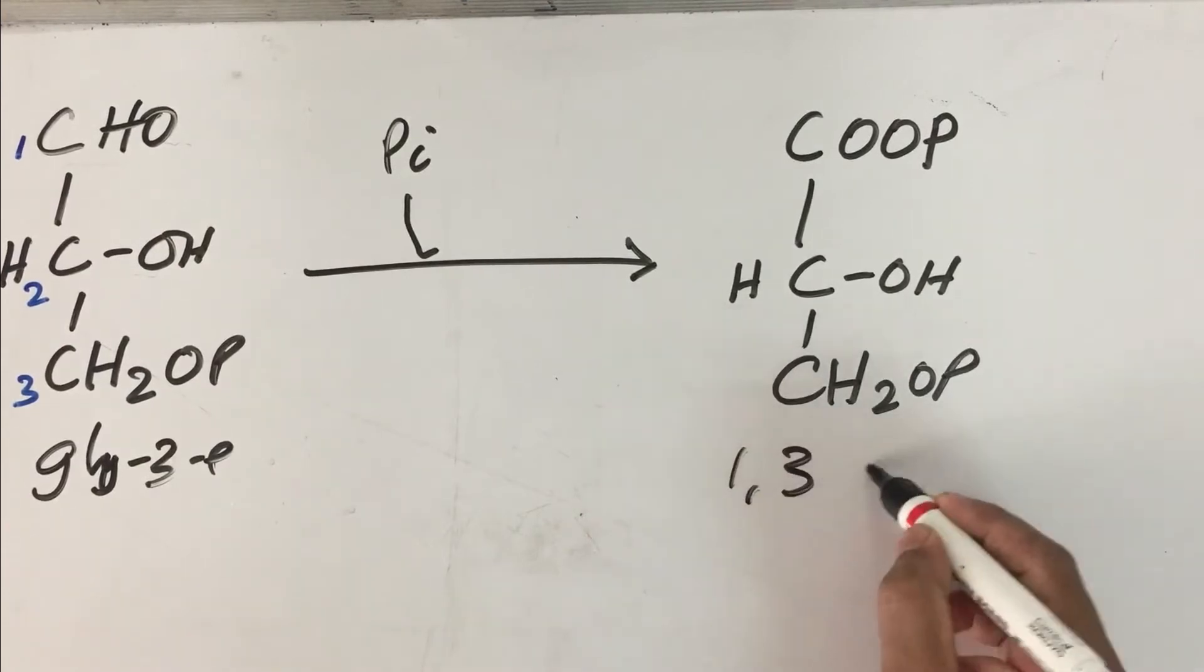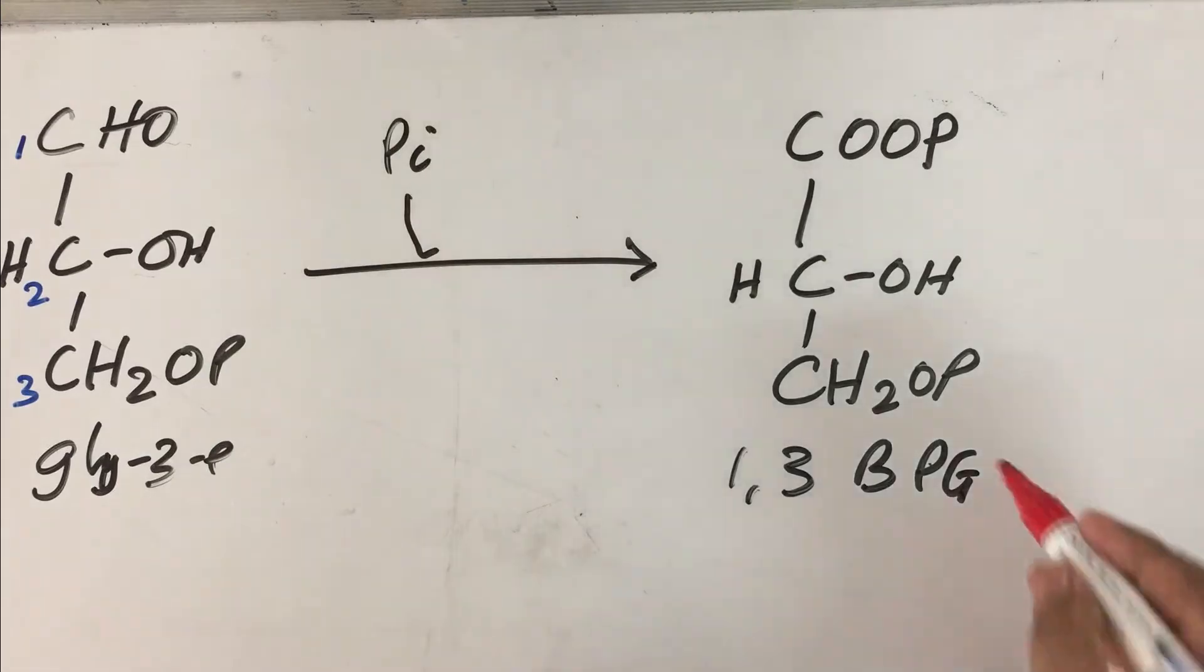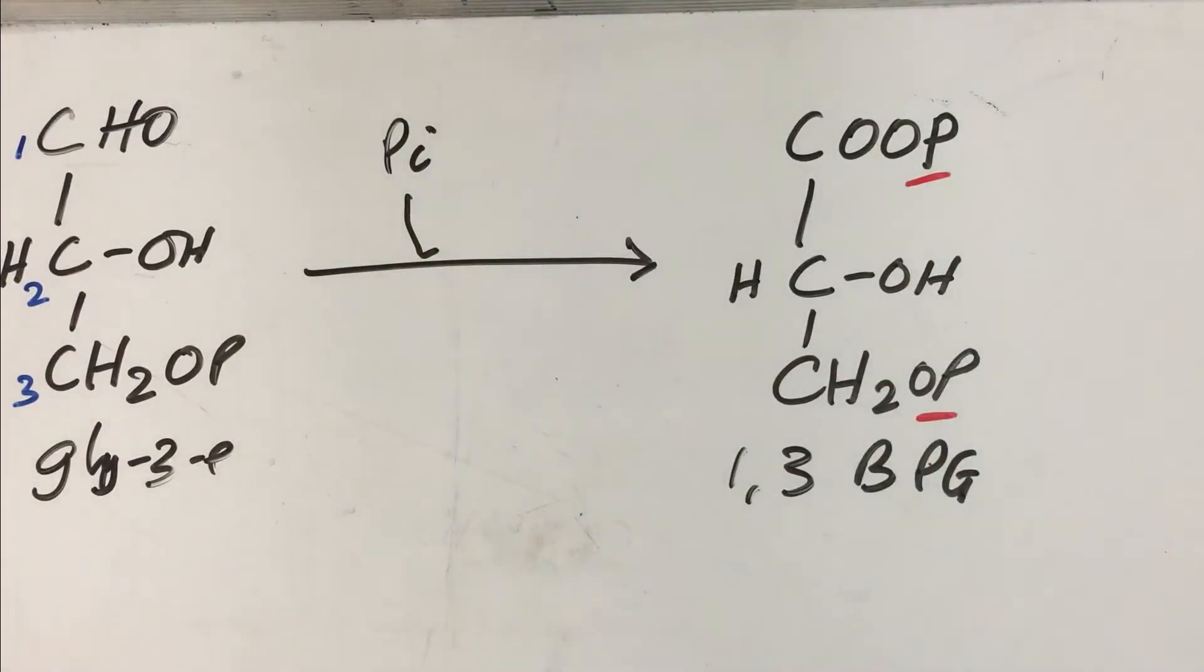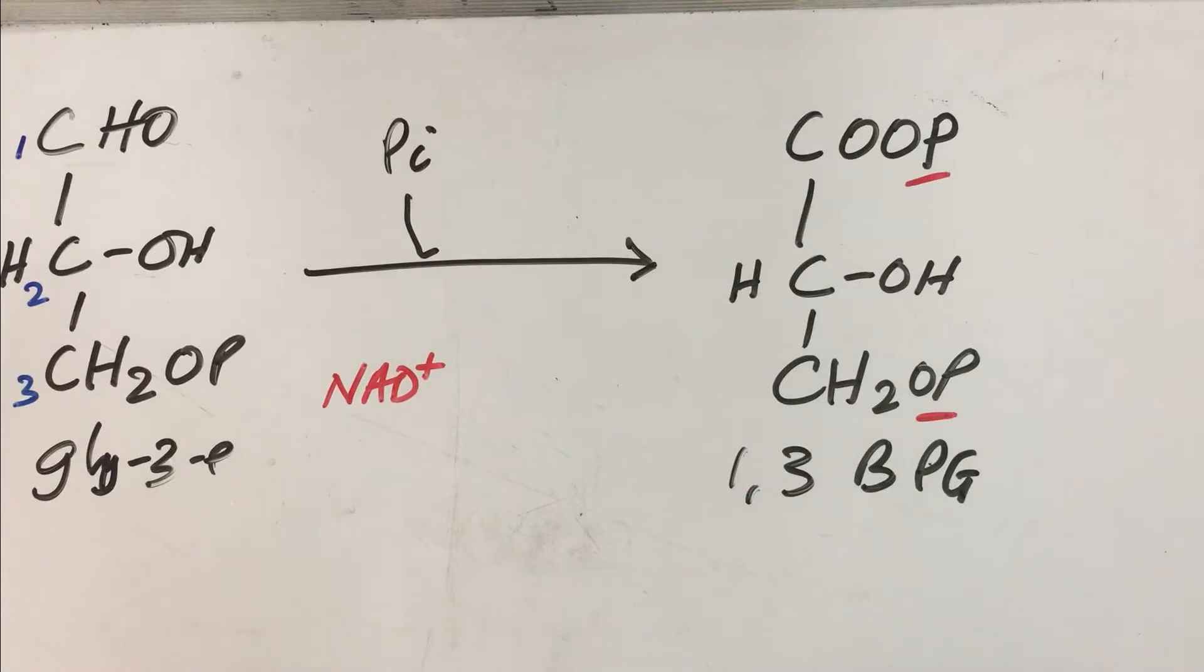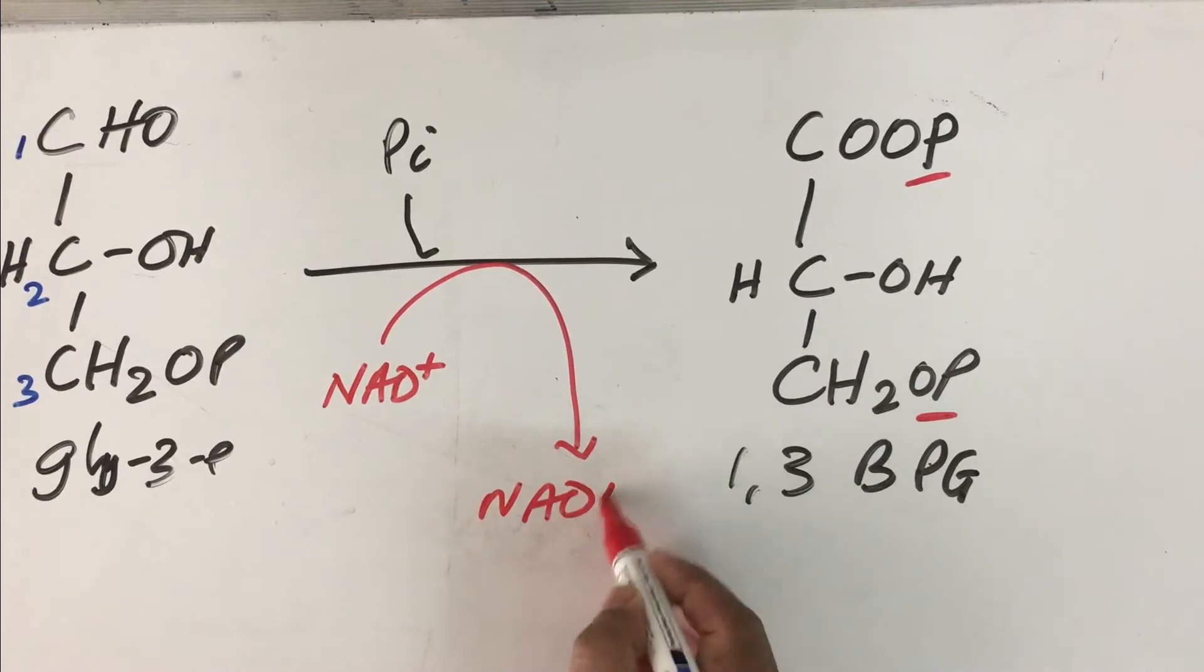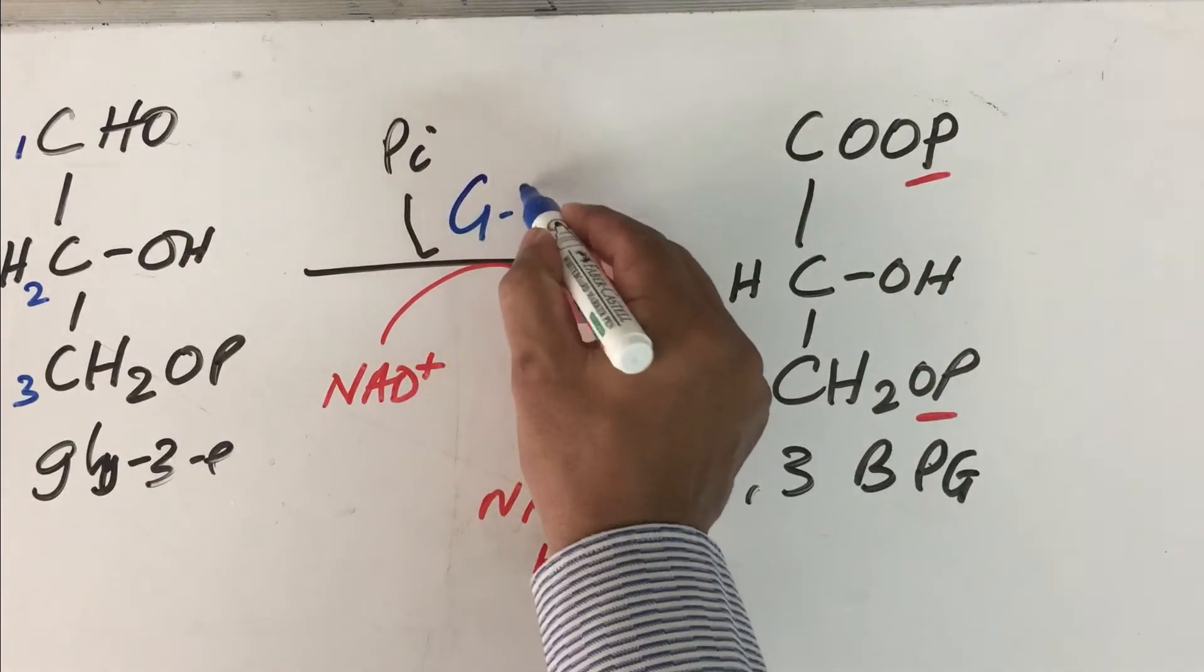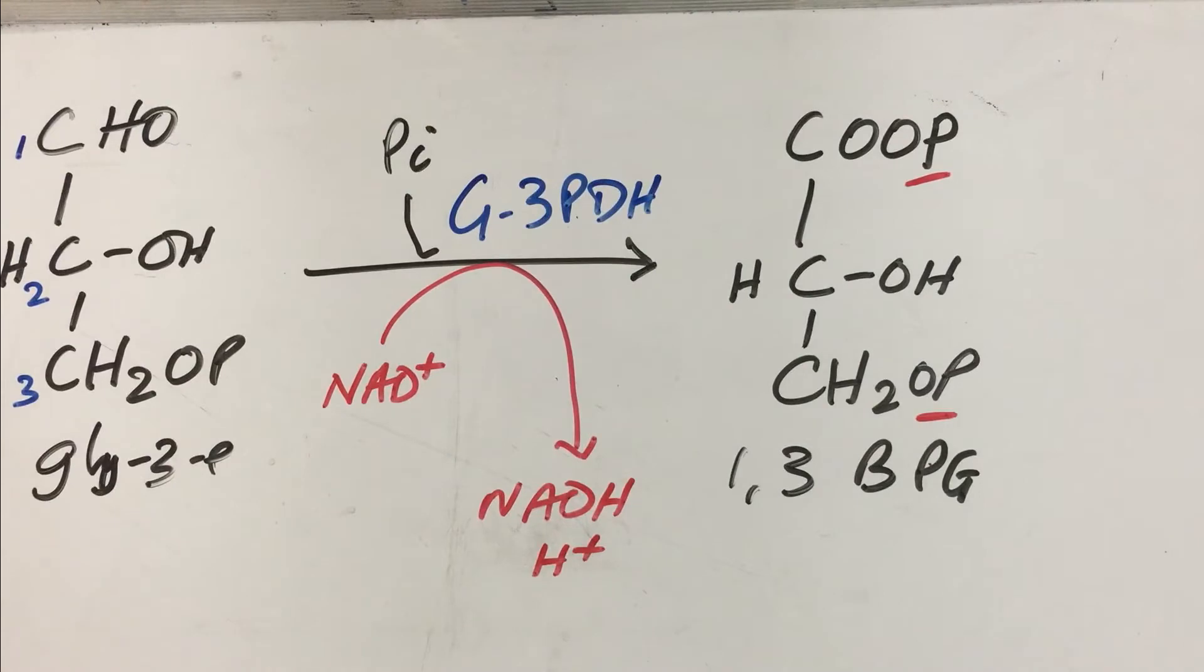This is 1,3-bisphosphoglycerate. We call it 1,3-bisphosphoglycerate because the phosphate groups are at two different places. At the same time, NAD, of which we have limited quantity in a cell, is getting reduced to NADH and H+. This H+ will be released into solution. This is catalyzed by the enzyme glyceraldehyde 3-phosphate dehydrogenase, a very important enzyme.